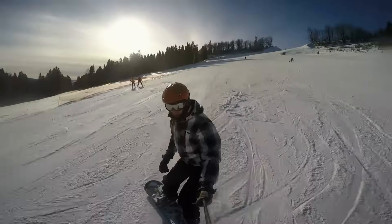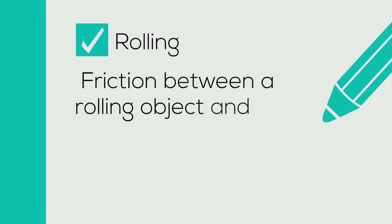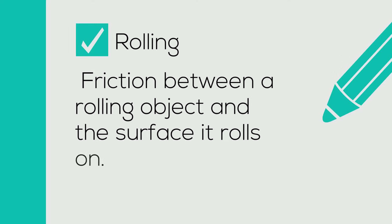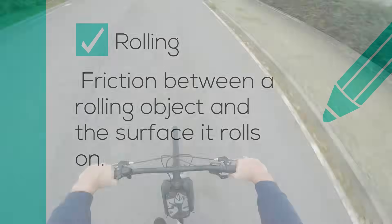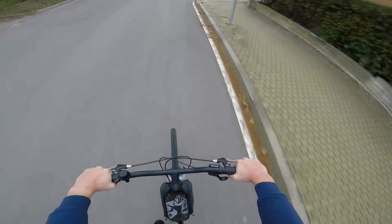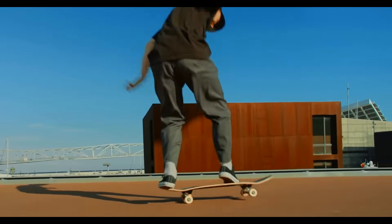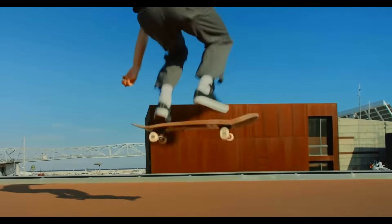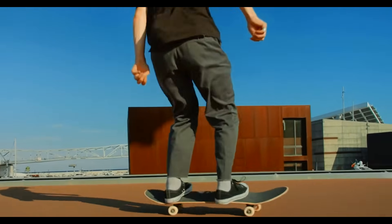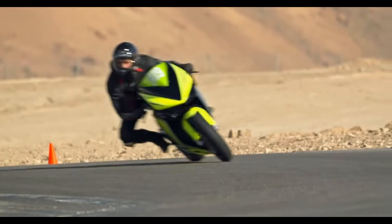Rolling friction is friction between a rolling object and the surface it rolls on. For example, take a look at this bike tire and the road, the skateboard wheels, and this motorcycle tire — which is very important.